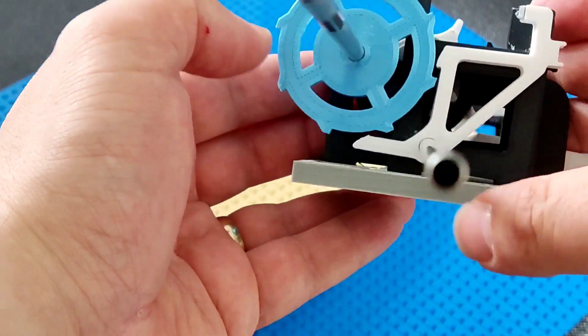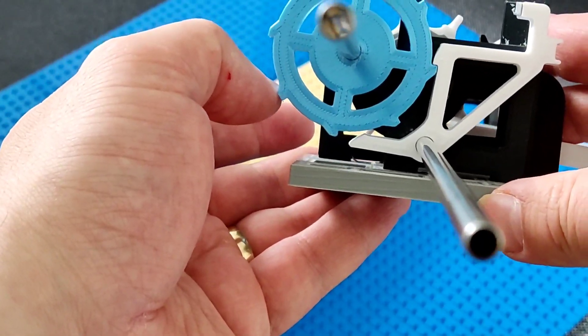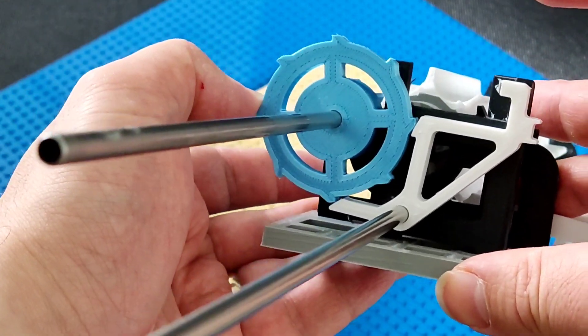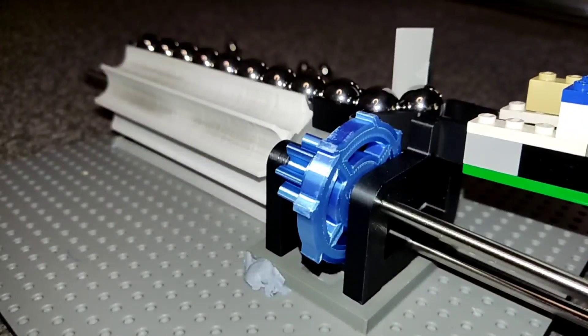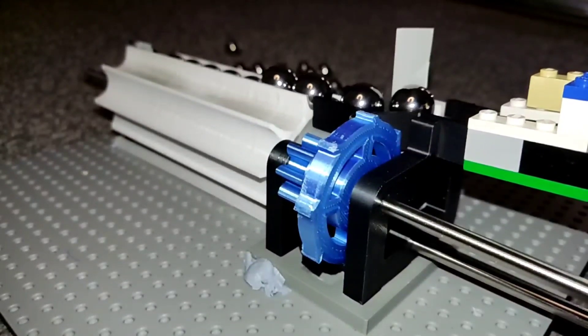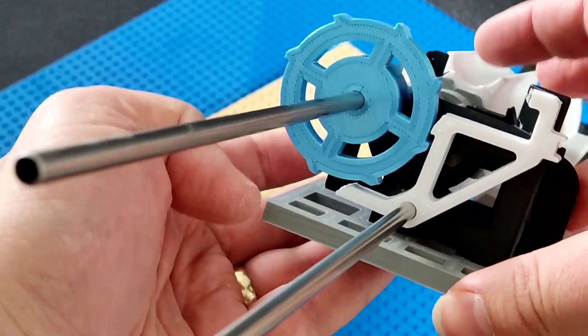You see, the trigger on this escapement is tiny, like one millimeter tiny, and I am relying on this to catch a spinning wheel which has the force of sixteen marbles slamming into it. It seems kind of obvious now that it would have some difficulties with this.